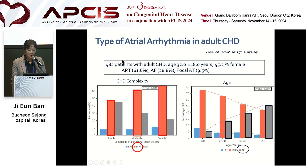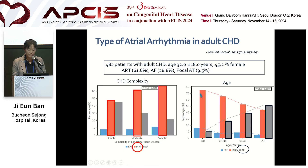A multicenter study assessed the type and pattern of atrial tachyarrhythmia in adult congenital heart disease. A total of 482 patients were enrolled. The most common tachyarrhythmia was IART, about 60%, and IART increased with disease complexity. IART was predominant in younger ages, accounting for 75%. By contrast, AF increased with age and was the most common tachyarrhythmia in those older than 50 years.